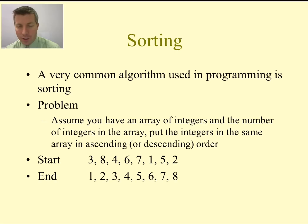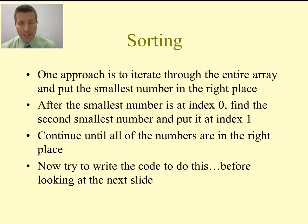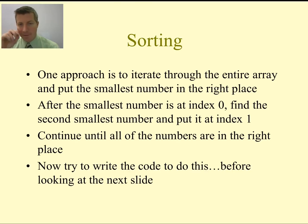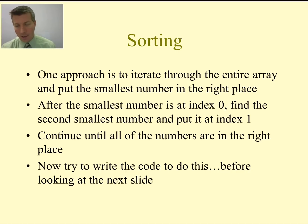How do we go about sorting? One approach is that we can iterate through the entire array and put the smallest number in the right place. After we put the smallest number in the right place, we iterate through the entire array again and put the second smallest number in the right place. We continue all the way until all of the numbers are in the right place.